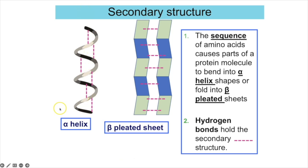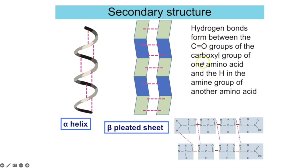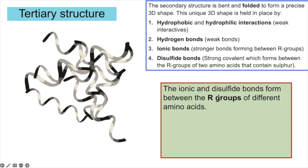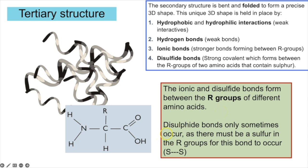The secondary structure is the further folding of the primary structure into either an alpha helix or beta pleated sheets, held in place by hydrogen bonds between the oxygen in a carboxyl group and the hydrogen on an amine group of different amino acids. The tertiary structure is the further folding to form a unique 3D shape, held in place by four types of bonds: hydrophobic and hydrophilic interactions (weak), hydrogen bonds, ionic bonds (stronger, forming between R groups), and disulfide bonds (only present when two amino acids have sulfur-containing R groups).